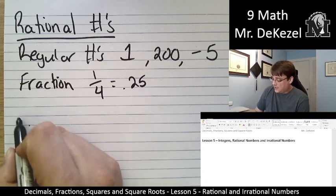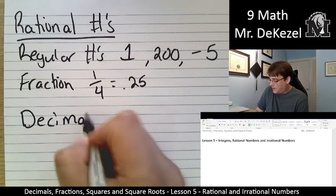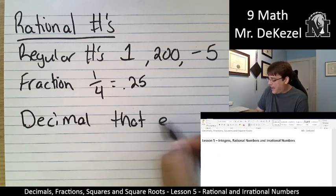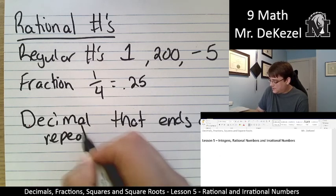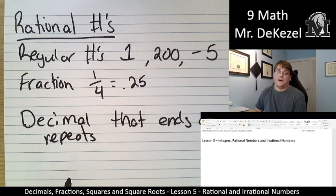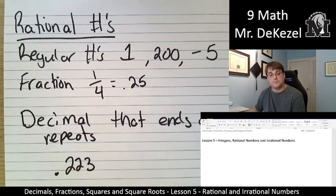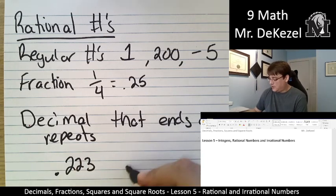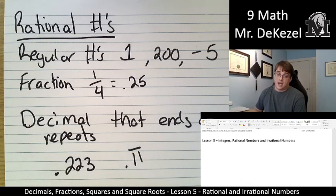Essentially, the key is that any number that has a decimal that ends or repeats is a rational number. So 0.223, that is rational. 0.11 repeating, that is rational.